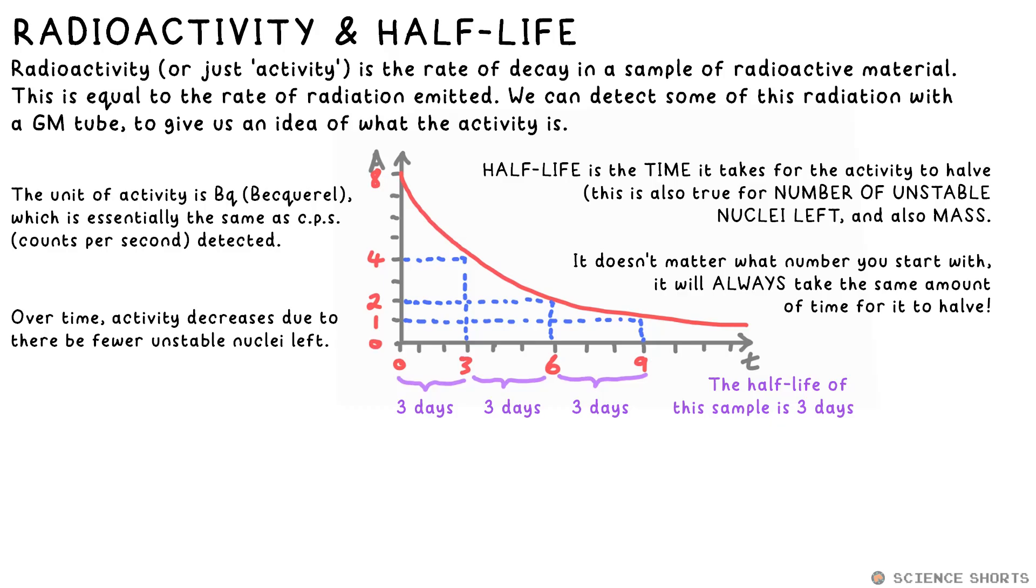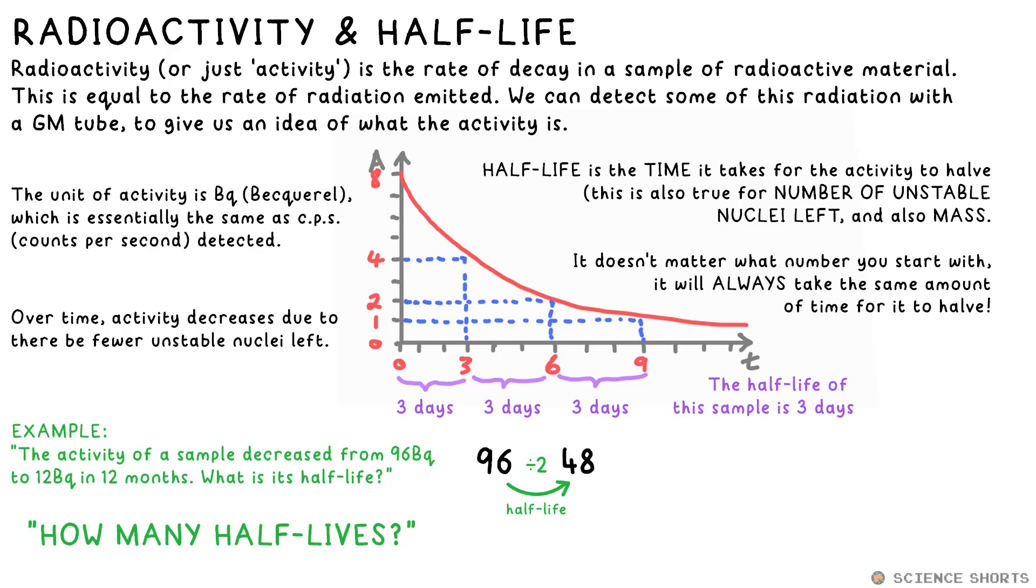You could also be asked to calculate half-life. Let's say that we have a sample that started at 96 Becquerel activity, and it fell to 12 Becquerel after one year, 12 months. The question you always have to ask is, how many half-lives? You don't do 96 divided by 12. Instead, you count how many times you had to halve it to get to the second number. One half-life gets you to 48 Becquerel. Two half-lives, 24. Halving again once more gets us to 12. It took three half-lives to decrease from 96 to 12 Becquerel. So if 12 months is three half-lives, that means that one half-life is a third of that, so four months.